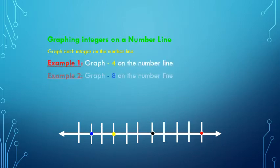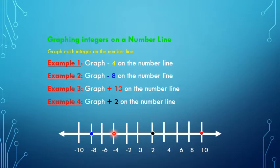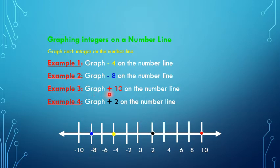To graph these integers on the number line, I'll start with negative 4. I find negative 4 on the number line and mark off the point. Next, I graph negative 8 — I go to the number line, find negative 8, and mark off the point. Then I graph positive 10 — I find positive 10, or simply 10, they are the same, and mark off the point.